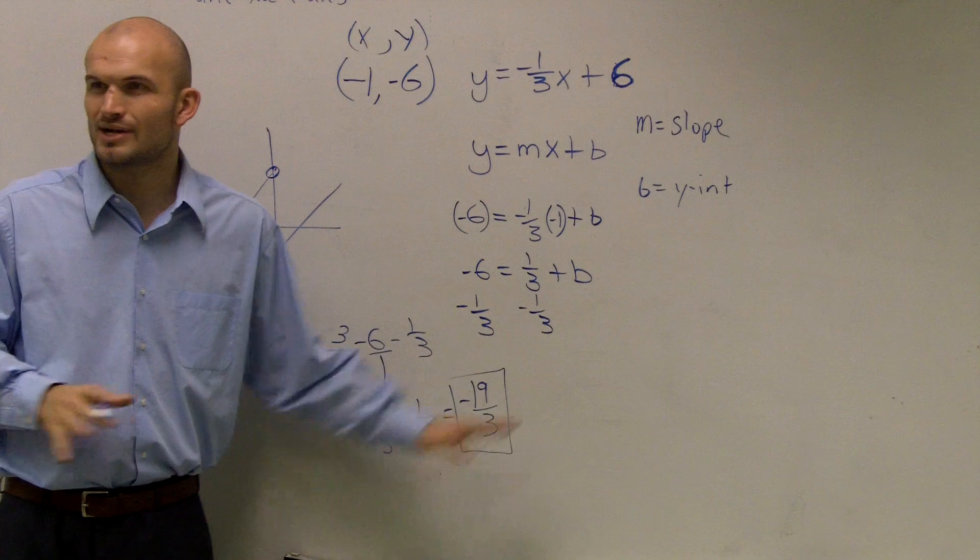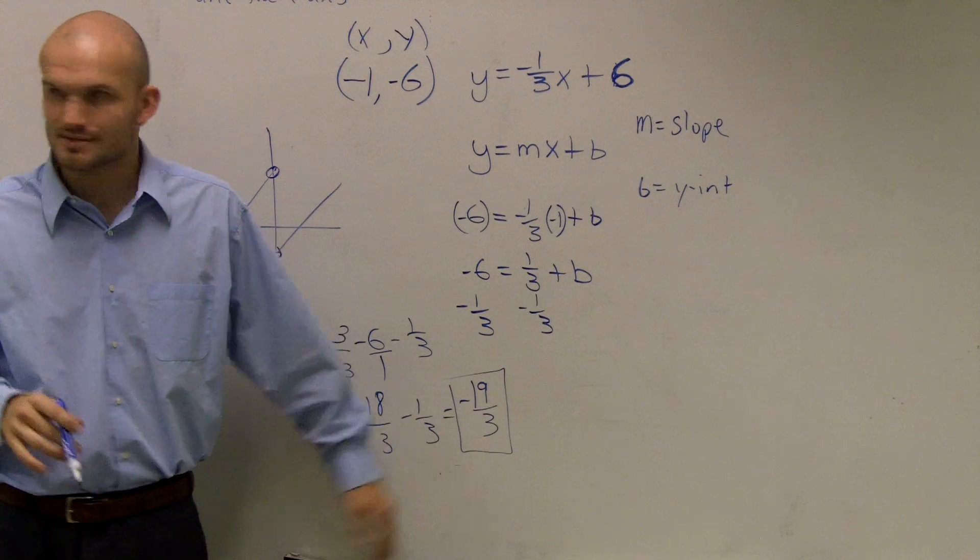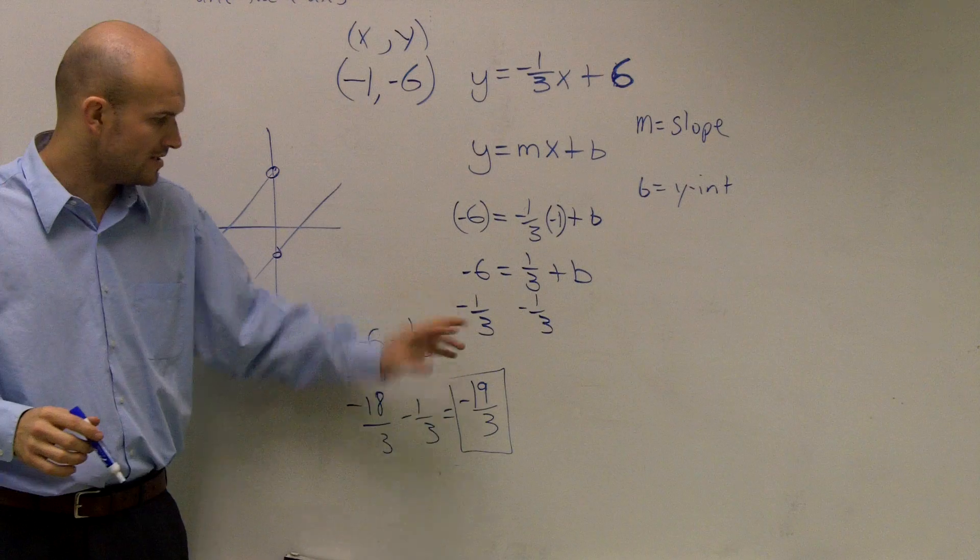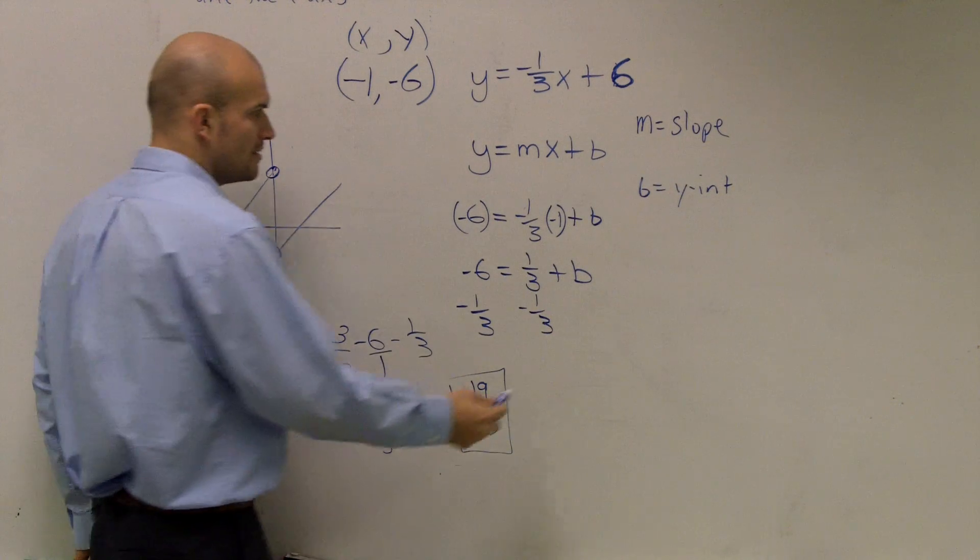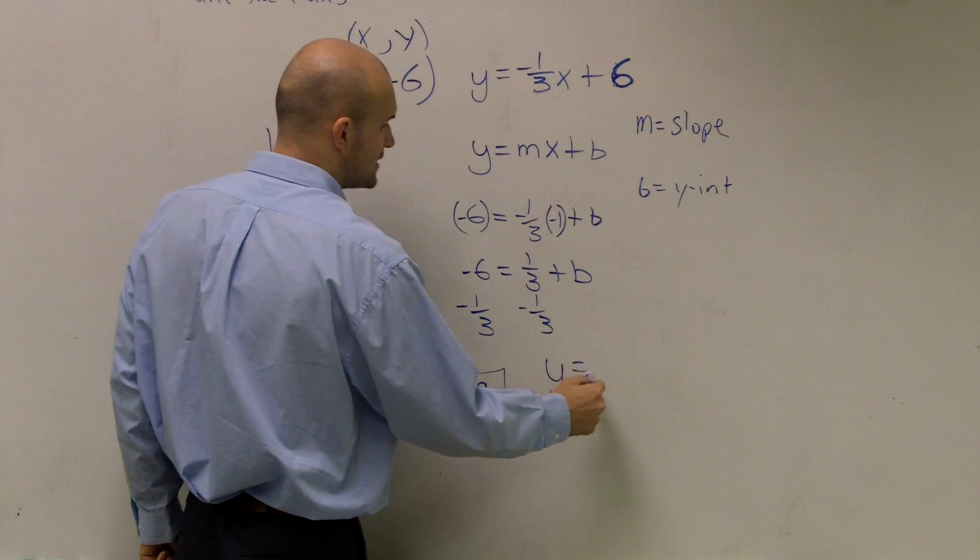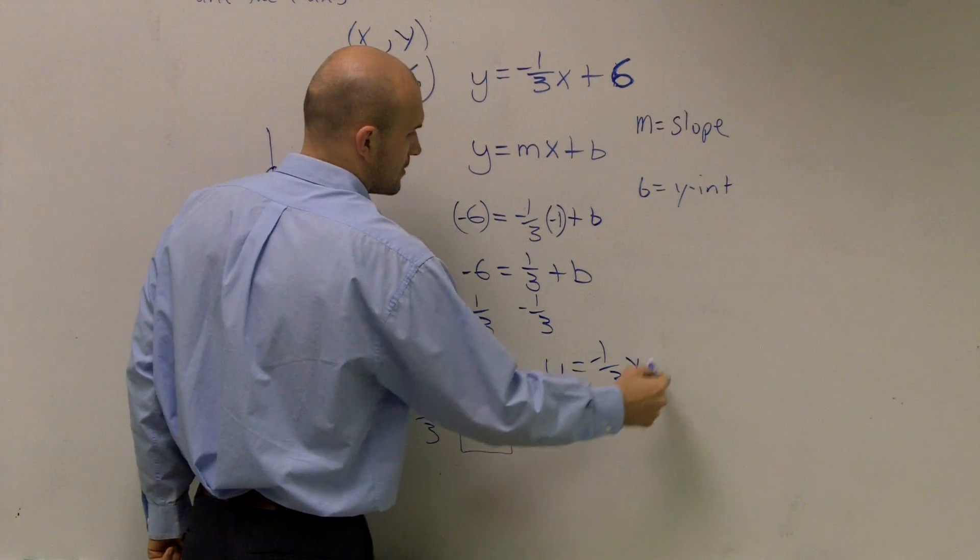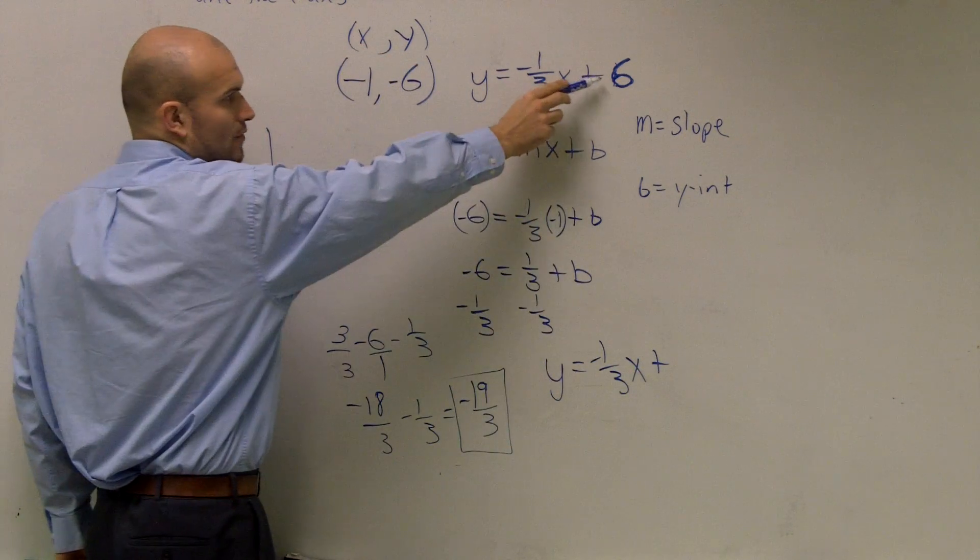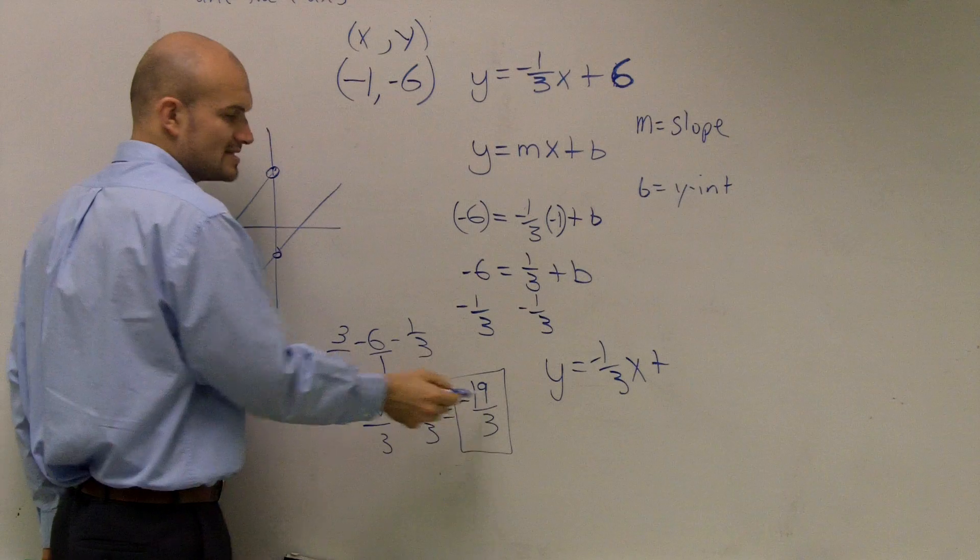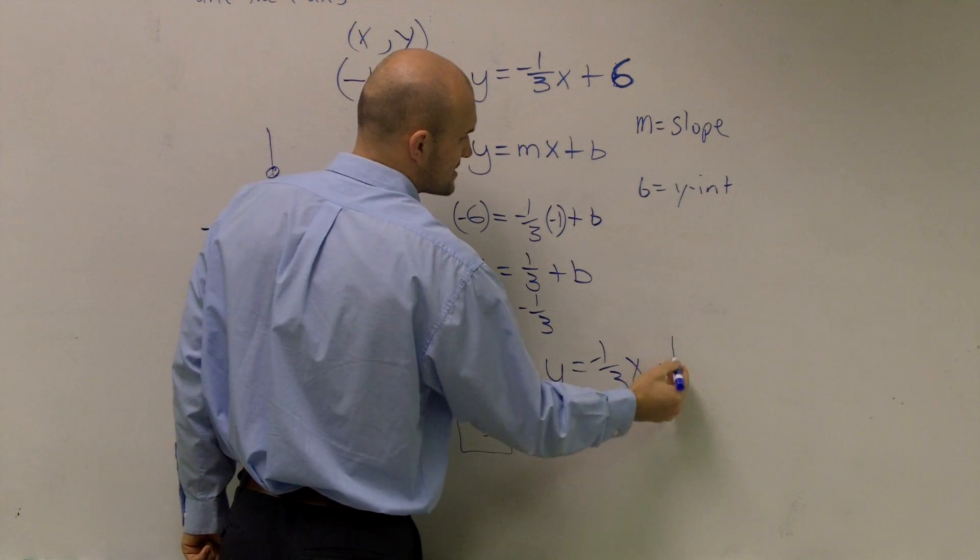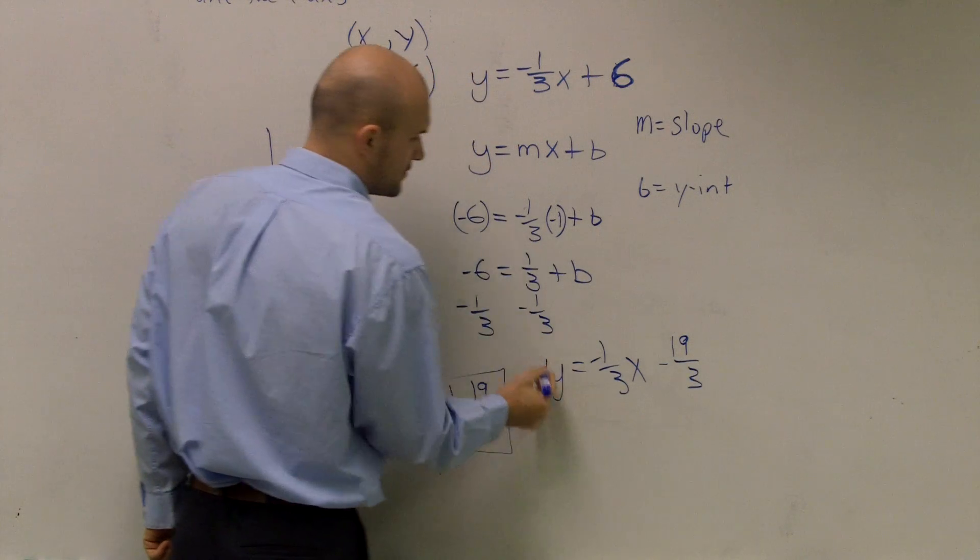FYI, for your quiz, you're not going to have a fraction like this. You just need to make sure you know how to subtract and get your B. So once you solve for B, my final equation now is Y equals my same slope, but I do not have the same Y-intercept. Instead of 6, it's negative 19 over 3. So instead of writing plus a negative, we can just write minus 19 over 3.